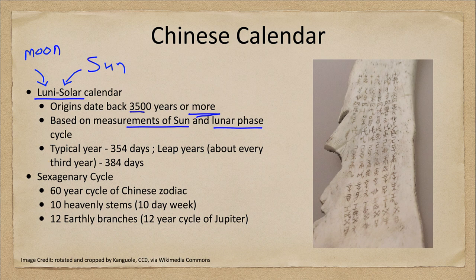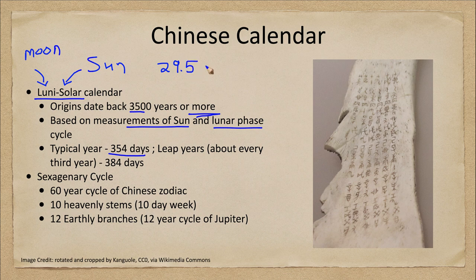Things were divided up a little bit differently than what we do, and we've seen that with other calendars. A typical year had 354 days. Why such an odd number of days? Well, that is 29 and a half — which is the cycle of phases of the moon — times 12. So 12 months, with a month being exactly 29 and a half days. Multiply those two together and you get 354.